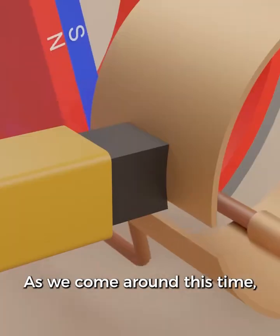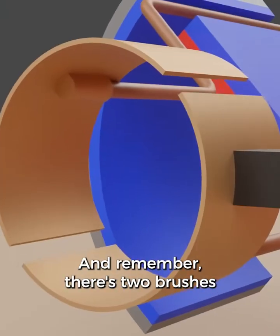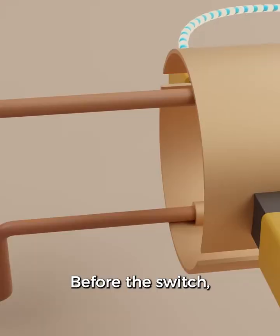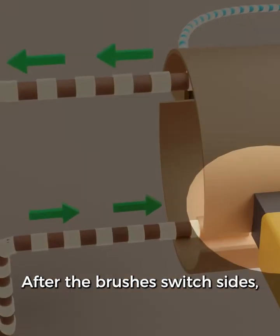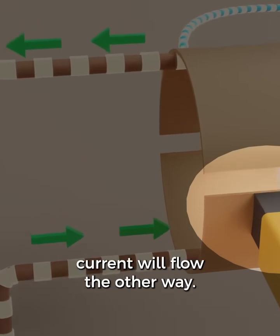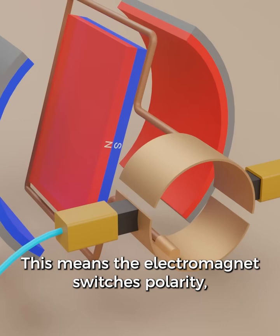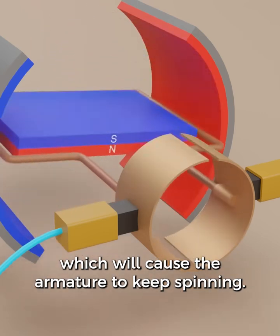As we come around this time, the brushes will switch contact to the other side of the commutator ring. Remember there's two brushes so this is happening on both sides. Before the switch, the current in the armature is flowing this way. After the brush has switched sides, current will flow the other way.